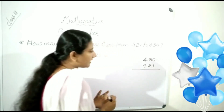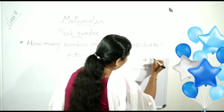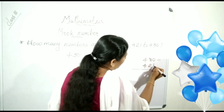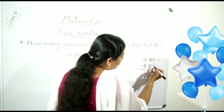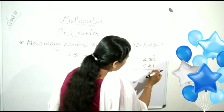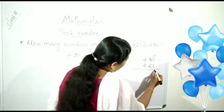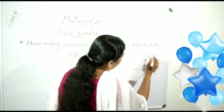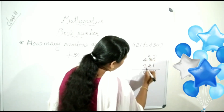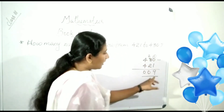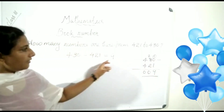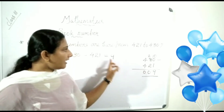How do we subtract? Here is 0. So, 0 minus 1 is not possible. So, we take borrow. Here, 10 minus 1 is equal to 9. Here, the number is 2. 2 minus 2 is 0. 4 minus 4 is 0. So, what is the answer? The answer is 9.